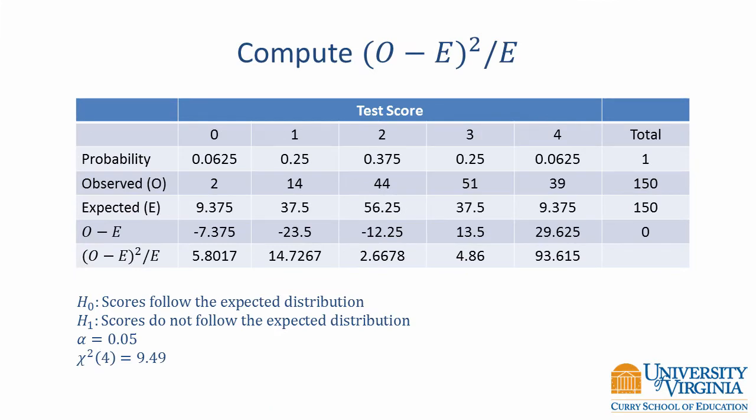The observed minus expected frequency is also known as a raw residual. We can square each of the raw residuals and divide them by their expected values. For example, if we take negative 7.375, square it, and divide by 9.375, we get 5.8017.